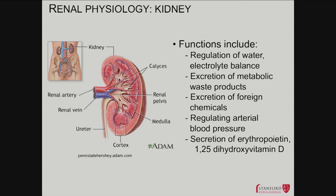So this is what its gross structure looks like. It's got a renal artery coming in, renal vein going out. And it's got what's called a cortex — this rim of tissue where a lot of the filtration takes place. And then it's got an inner part called the medulla, which is where the urine is formed and collected, concentrated, and sent out through the ureter, which goes down to the urinary bladder.